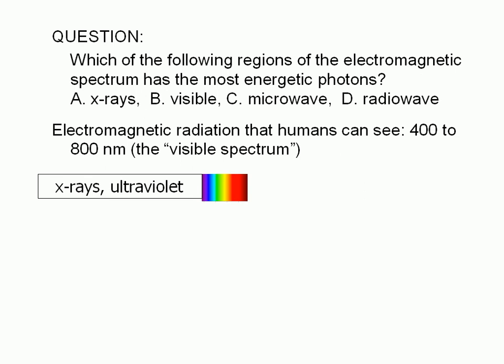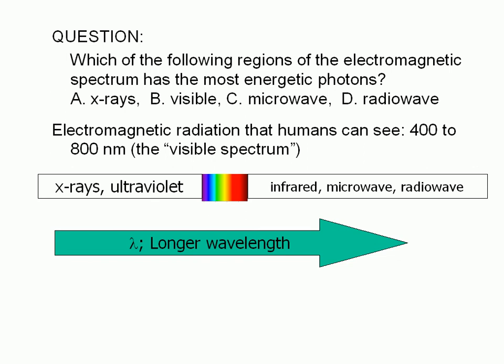Wavelengths longer than that of red light belong to the infrared, microwave, and radiowave regions. In other words, for the types of electromagnetic radiation shown here, x-rays have the shortest wavelengths and radiowaves have the longest.